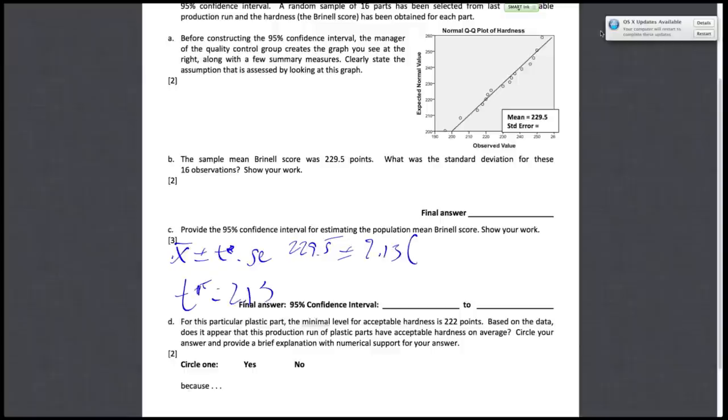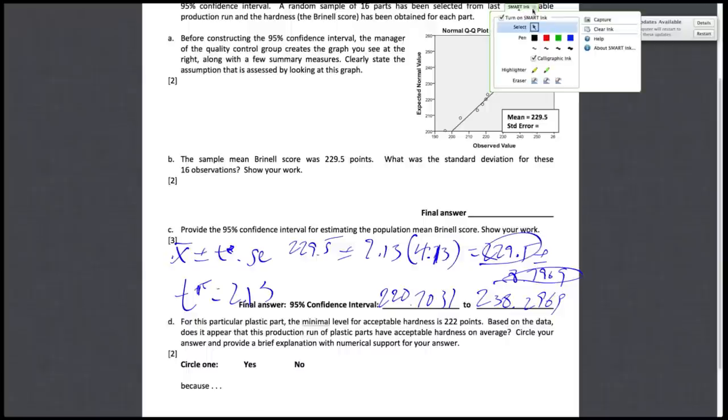So we'll put 2.13 here, then multiply it by the standard error of the mean, which has been given before as 4.13. So if you do all the math, you're going to find this to be 229 plus or minus 8.7969. So then your final answer will just be 220.7031 to 238.2969. If you just take this margin of error and add and subtract it to the sample mean. All right, so that's part C.